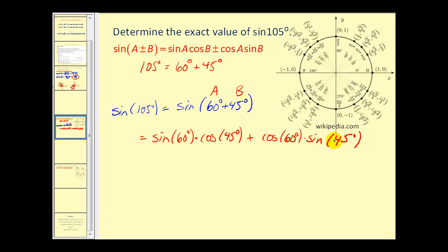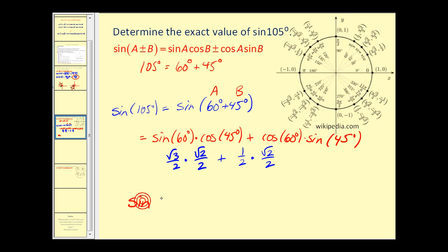We'll use the unit circle to find these values. Sine(60°) = √3/2, times cosine(45°) = √2/2, plus cosine(60°) = 1/2, times sine(45°) = √2/2. The denominator is 4 in both cases, and the numerator is √6 + √2. So sine(105°) = (√6 + √2)/4.